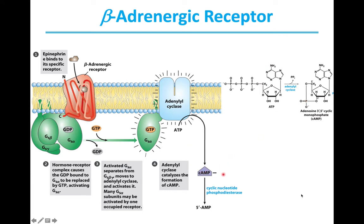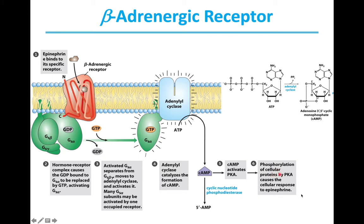Cyclic adenosine monophosphate is a secondary messenger. It activates protein kinase A, which further activates other enzymes through phosphorylation of cellular proteins, causing a cellular response to the epinephrine molecule that originally interacted with the beta-adrenergic receptor. In addition, cyclic AMP is degraded to adenosine monophosphate by cyclic nucleotide phosphodiesterase, which dampens the secondary messenger signal.